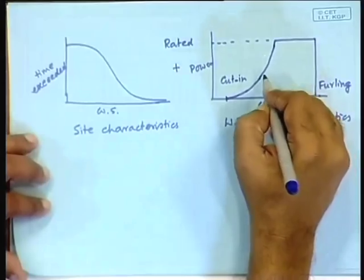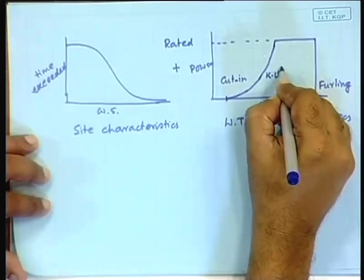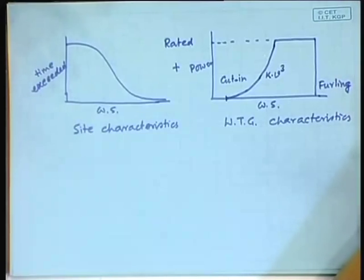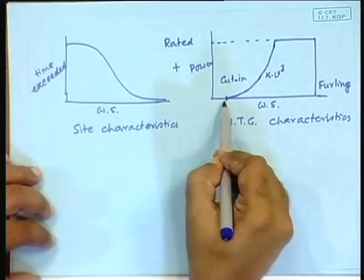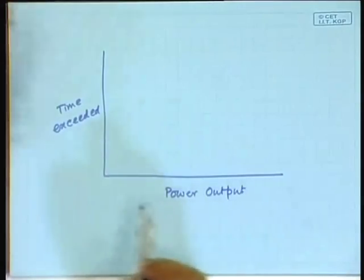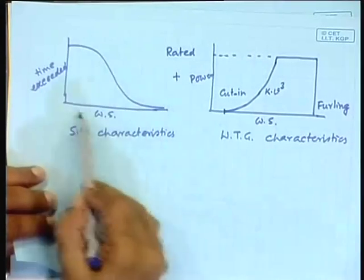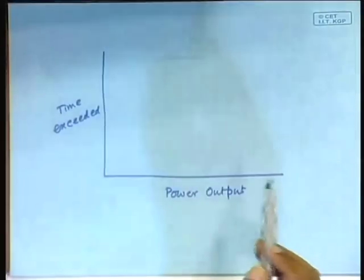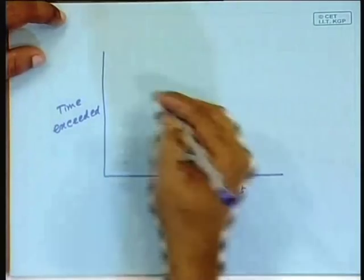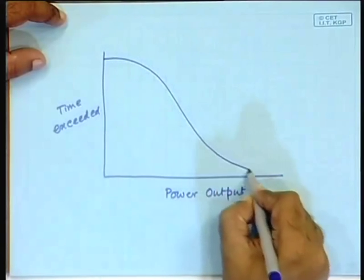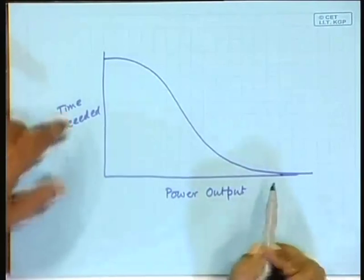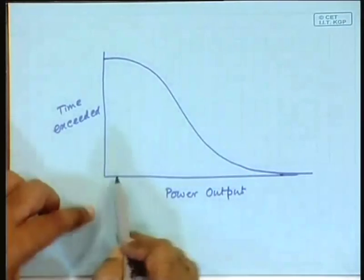There is a constant times v-cubed. So for this characteristic, for every value of wind speed, the power output is k times v-cubed. You draw a characteristic similar to the wind speed duration curve, but now the x-axis is replaced by k times v-cubed, which leads to a similar curve — but the difference is that the x-axis values are all powers, meaning the velocity has been cubed to plot each point.